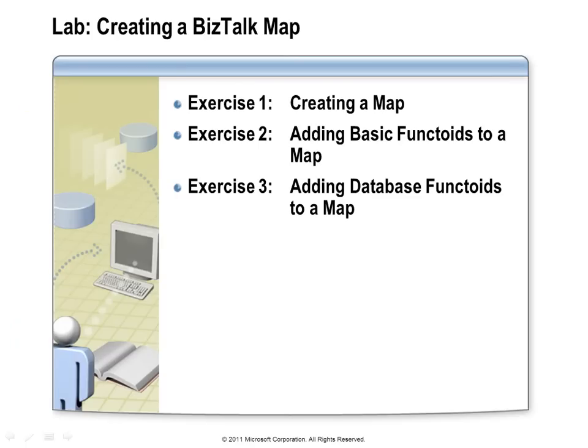In this lab, you'll add a new map to a BizTalk project that converts a sales order message from its raw flat file schema to the sales order XML schema. You'll try out the mapper's link by name and link by structure features, use some of the basic functoids, and also try out the database lookup functoid.